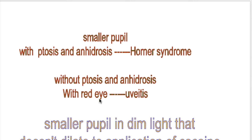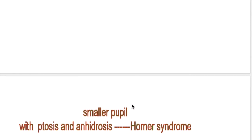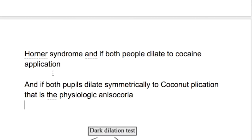A small pupil without ptosis and anhidrosis may occur in red eye, with features of pain in uveitis. A smaller pupil in dim light that does not dilate with application of cocaine is due to Horner syndrome. If both pupils dilate symmetrically to cocaine application, then it is due to physiologic anisocoria.